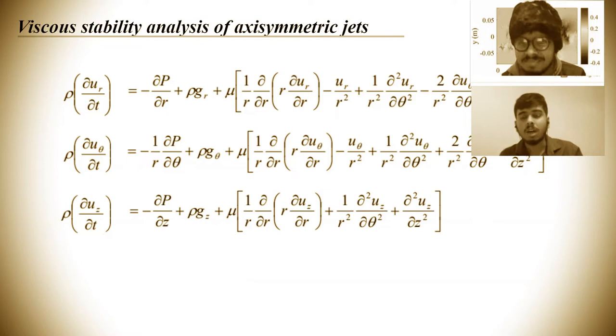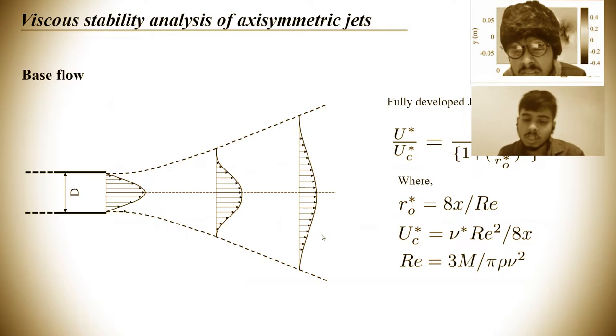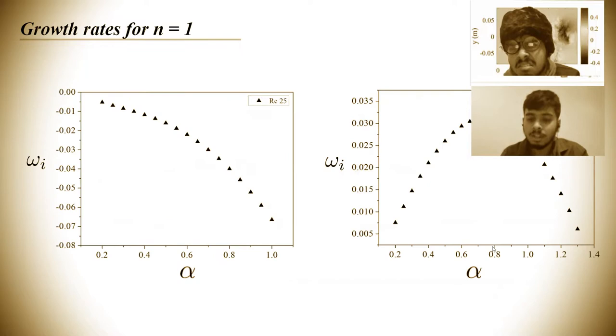The motivation of my thesis was to study the stability of axisymmetric jets. We start with the Navier-Stokes equations, which are on the screen. We plug in the base flow of the jet into the Navier-Stokes equations and also put in the modal disturbances of this form, which sets up the eigenvalue problem. Solving that, we get the growth rates of the modes, and here we find some interesting results.